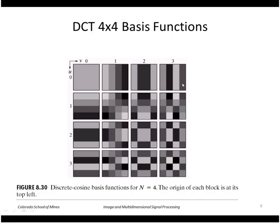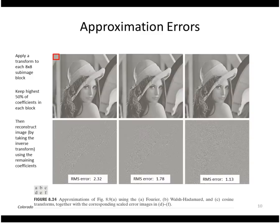To see how to use this in compression, we can apply the discrete cosine transform to sub-images or blocks. In this case we're showing it applied to each eight by eight block in the image. Next, we keep only the highest magnitude 50% of the coefficients in each block and set the others to zero, then reconstruct each block by taking the inverse cosine transform using the remaining coefficients. This lower row here shows the error between the reconstructed image and the original image, and it also shows the root mean squared error value.